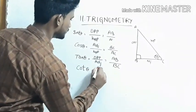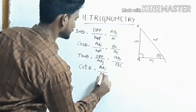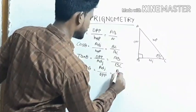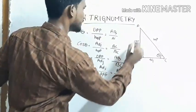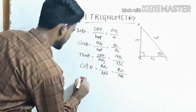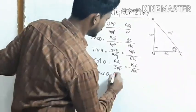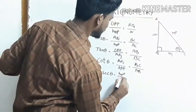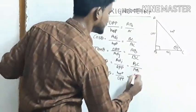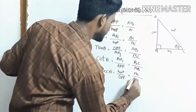Next, cot theta equals to adjacent by opposite. This equals to adjacent BC by opposite AB. Then cosec theta equals to hypotenuse by opposite. Cosec theta equals to hypotenuse AC by opposite AB.